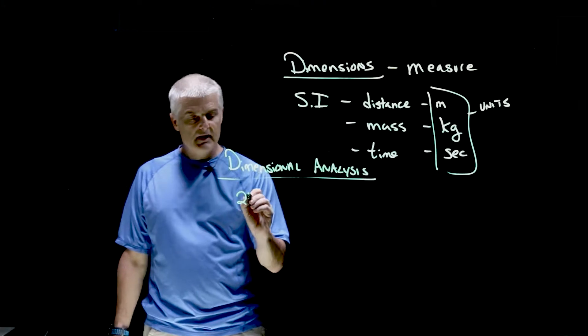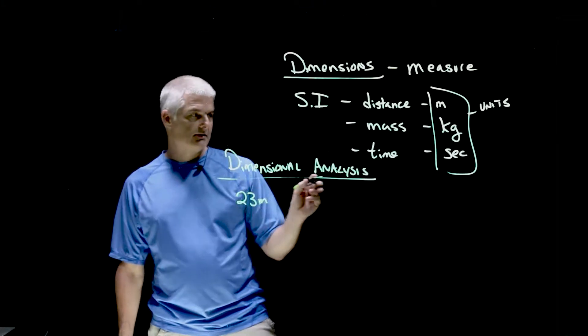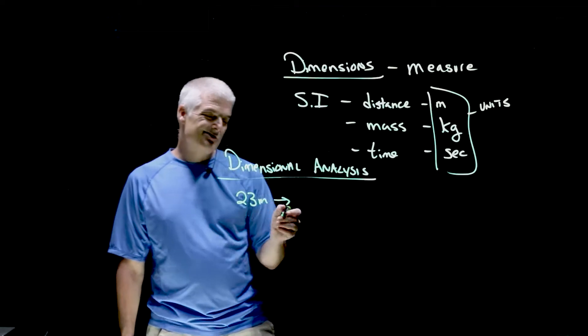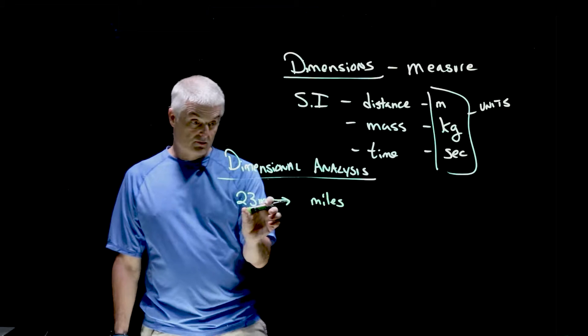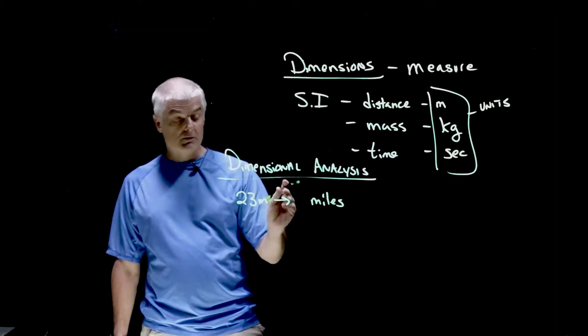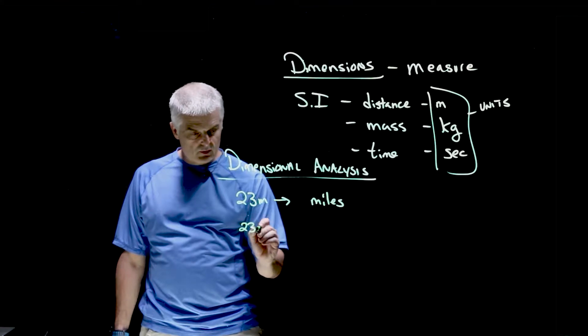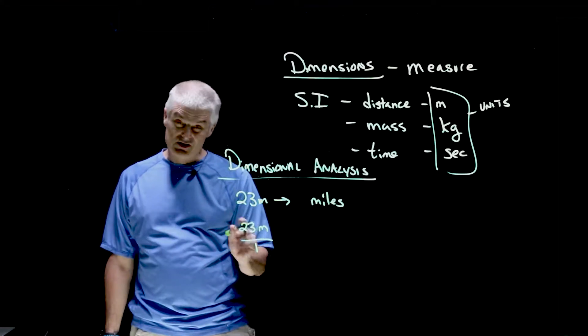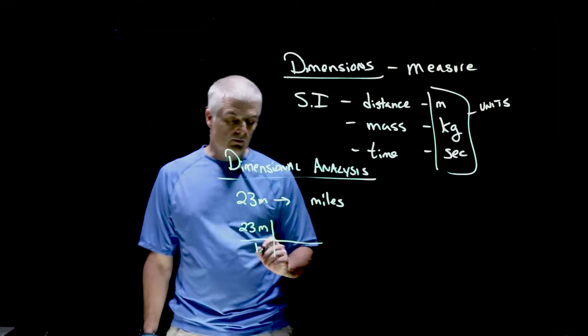So for example, if I've got 23 meters, and I want to convert it into miles. All right, 23 meters isn't very far, miles is a long ways. What you always do is you start with the number, 23 meters. You put it as a fraction over one. And what I want you to do is to use what we call the railroad tracks.